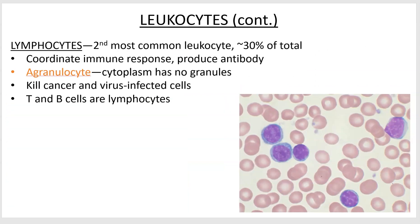Lymphocytes are the second most common, about 30%. These are big immune system cells. When you hear about your immune response or immunity to a virus, your lymphocytes would be responsible for that. You can build up an immunity to venom, and so on. Lymphocytes, also called T and B cells, will be dealt with in detail in a later chapter. One of their special functions is that they're the cells empowered to kill your virus- and cancer-infected cells.